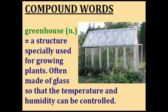A greenhouse is a structure especially used for growing plants. You'll see these used in gardens — the one in the picture has some tomatoes inside it. It's used for growing flowers and vegetables, and a greenhouse is usually made of glass so that the temperature and humidity inside can be controlled.